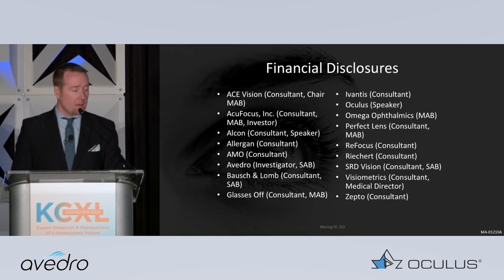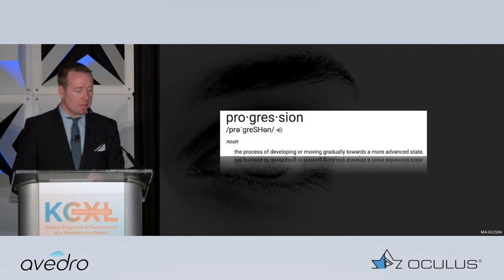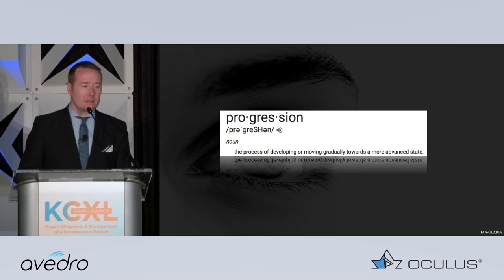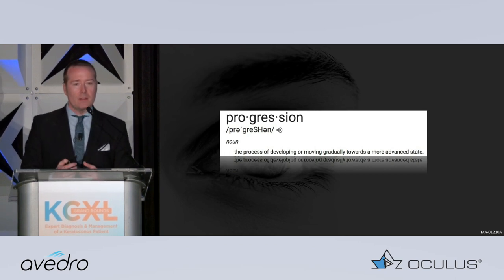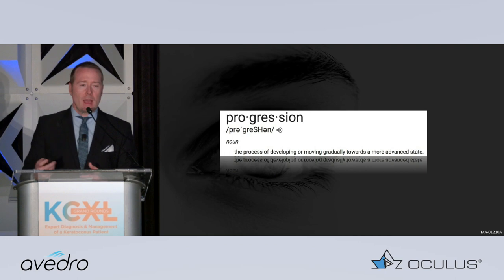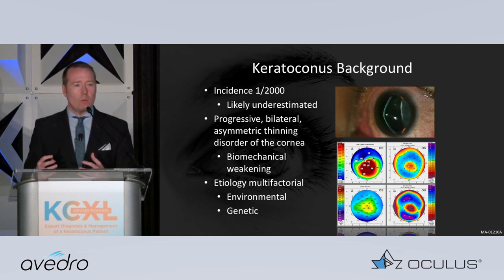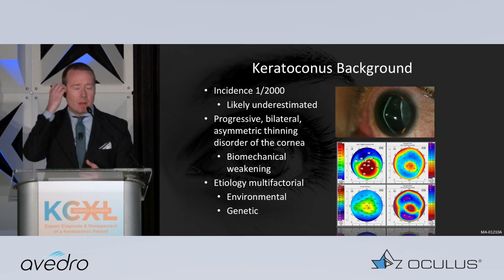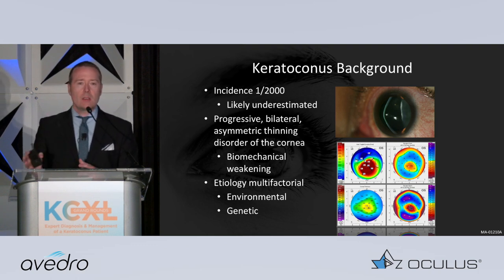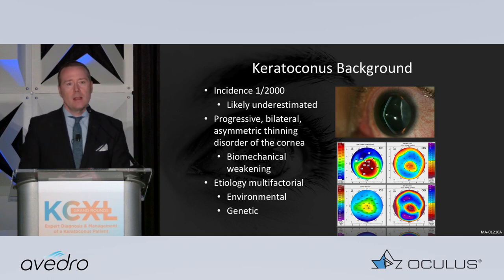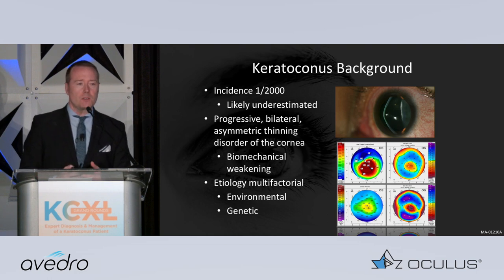I am a consultant for both OVADRO and for Oculus. When we think about the very basics and the definition of progression, this is the process of developing or moving gradually towards a more advanced state. The question is: how do we define success for treatment? It's interesting because we often hear people talk about regression or progression incorrectly — you've got to keep these terms straight. I want to talk about some history, historic FDA studies, lessons learned about what we've considered success, and how the FDA views success.